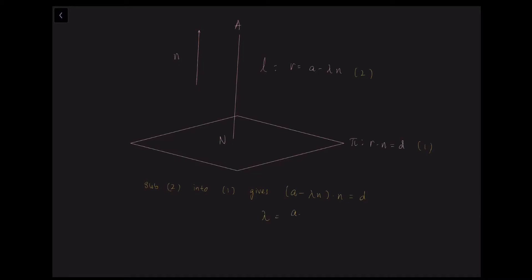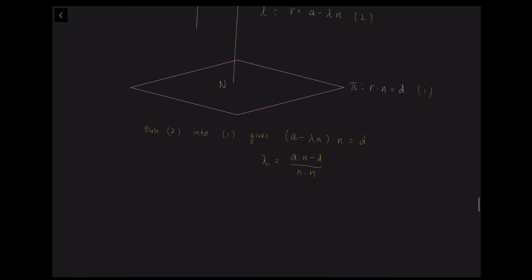In this case, we have r · n = d and r = a − λn. We label these two equations and substitute equation 2 into equation 1, giving (a − λn) · n = d. Solving for λ gives λ = (a · n − d) / (n · n). Thus the position vector of the point N is given by substituting this λ back in.